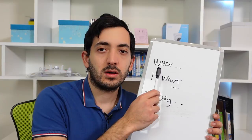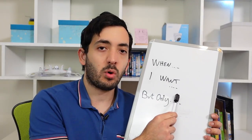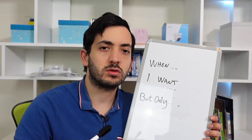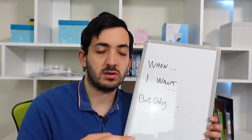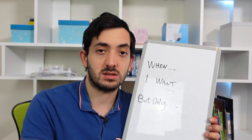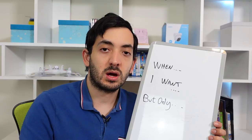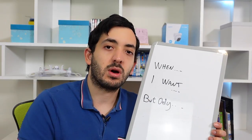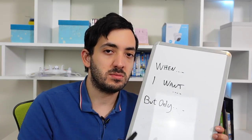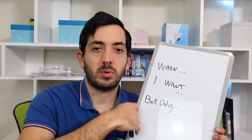Let me give you a framework for brainstorming automation ideas. Phrase your automations in natural language: 'When I want... but only if...' For example: 'When I get up in the morning and walk into the kitchen, I want my coffee machine to turn on, but only if I haven't already had tea.' This framework helps you figure out what you actually want to achieve by having a smart home.